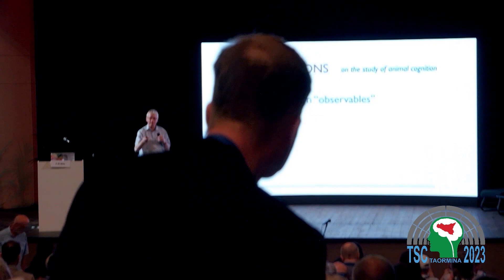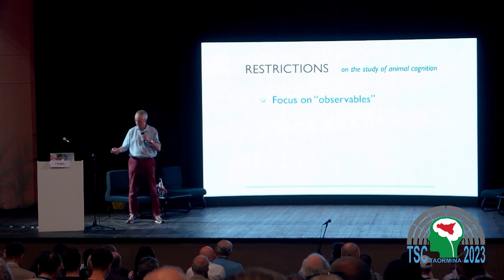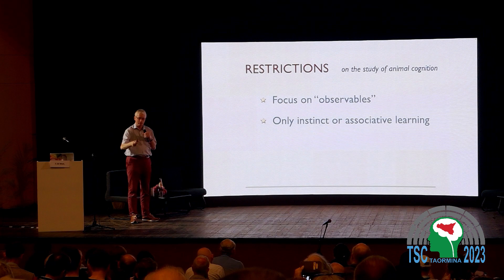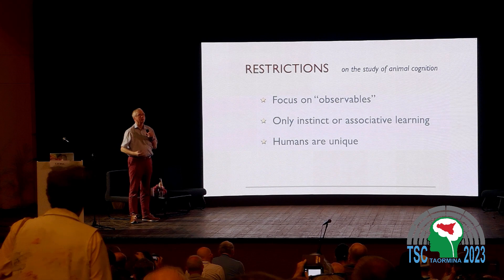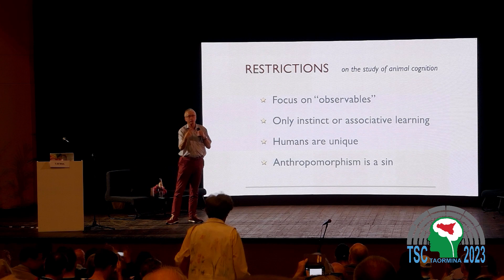The restriction was that we should focus on observable behavior. Behavioral science was the only science that insisted on that, even though in other sciences we deal with many unobservables — the Big Bang has never been observed, evolution has never been observed. In behavioral science, all behavior had to fit in two boxes: it was either instinctive or it was conditioning, and there was nothing else. Humans were by definition unique.